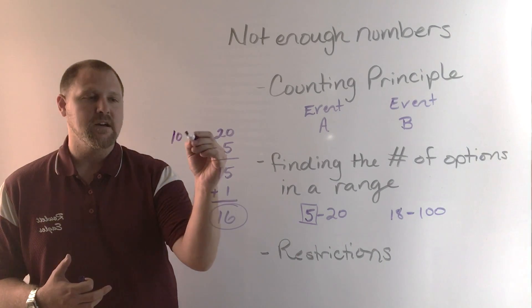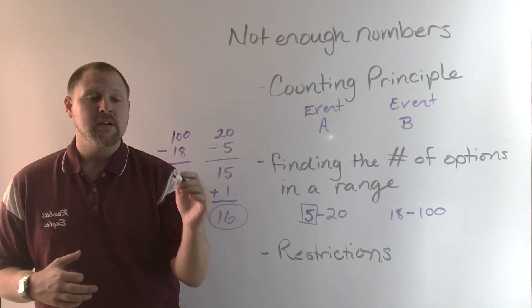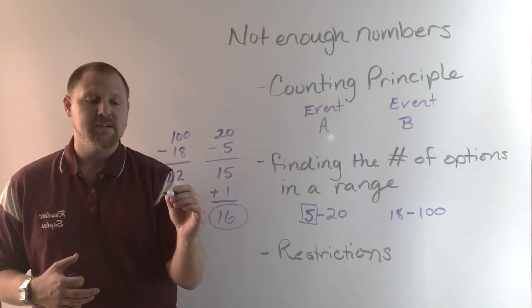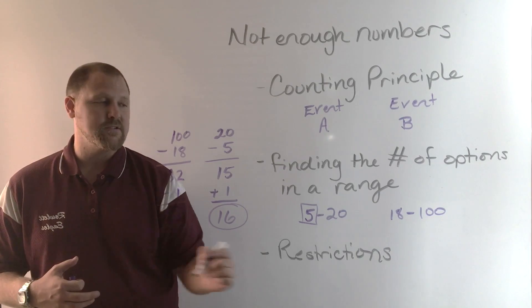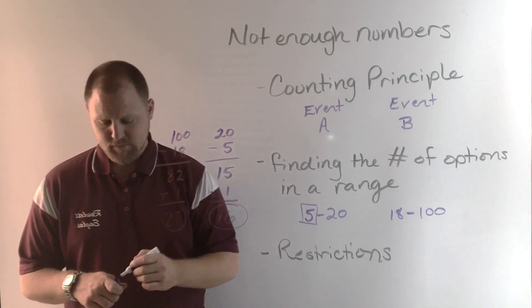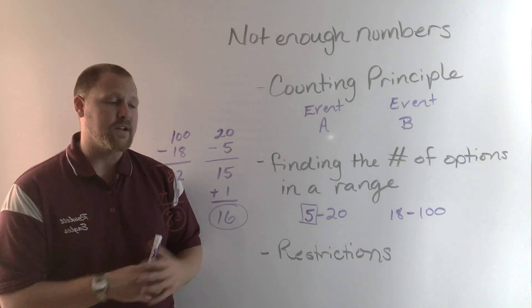From 18 to 100, again, you subtract 100 minus 18, and that's going to give you 82. But then you have to add one more, and there are 83 options of numbers in this range. So you need to be able to find the number of options within a specific range.